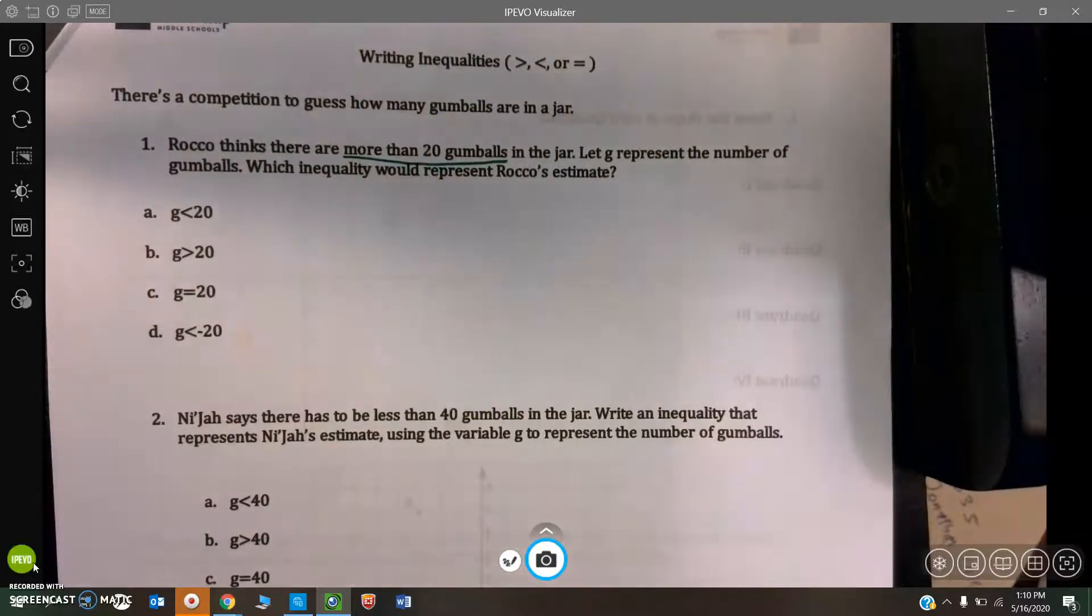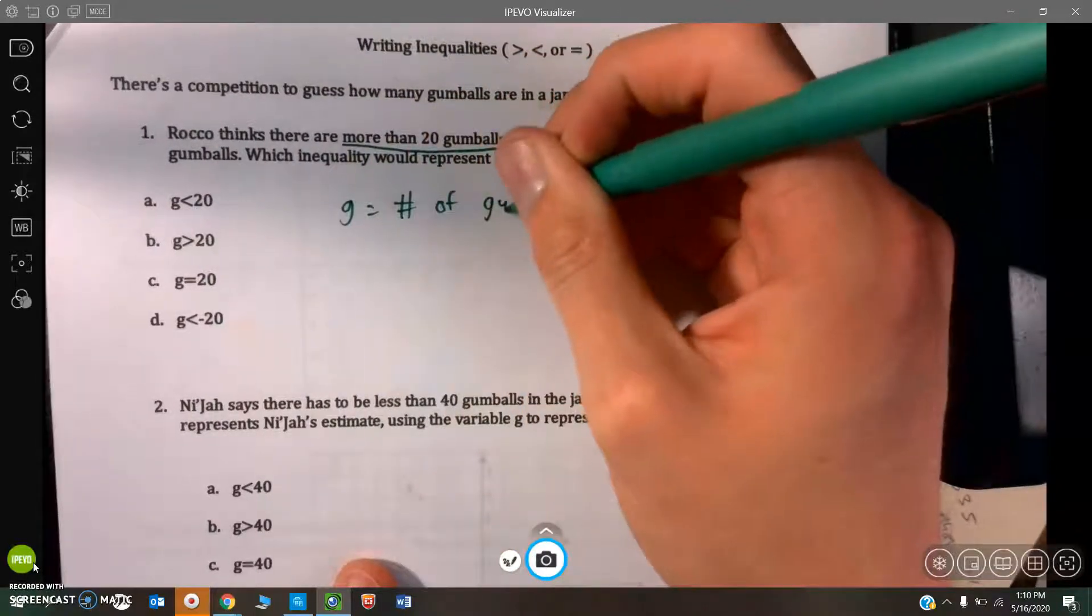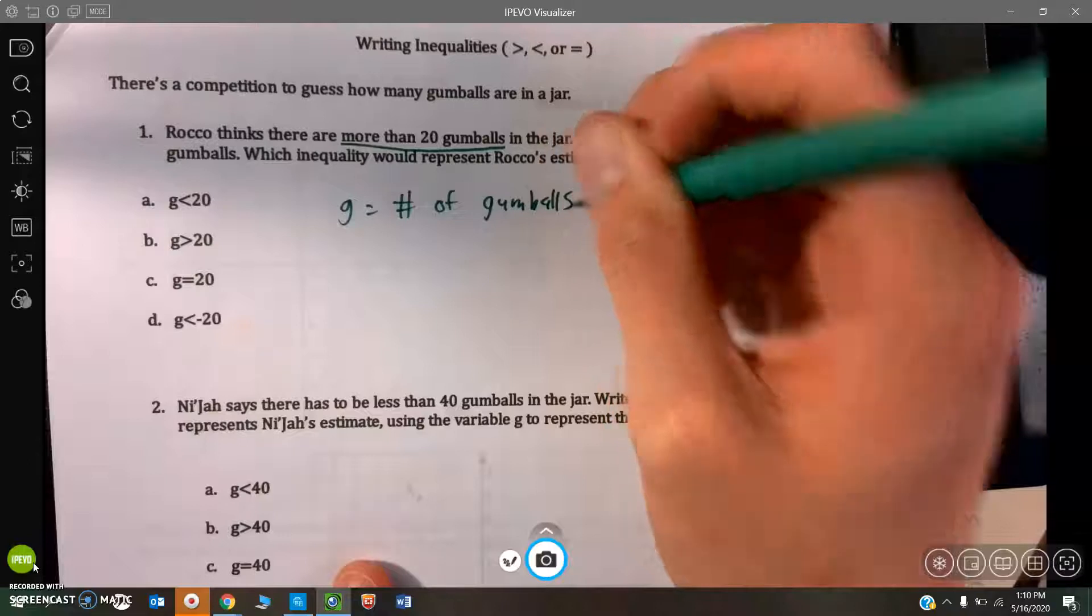We have A, B, C, and D. Once again, G is the number of gumballs. We call that letters in mathematics variables. Variables represent unknown numbers.